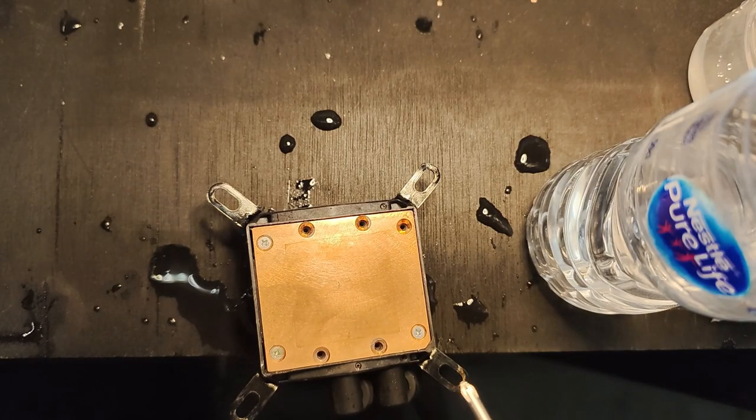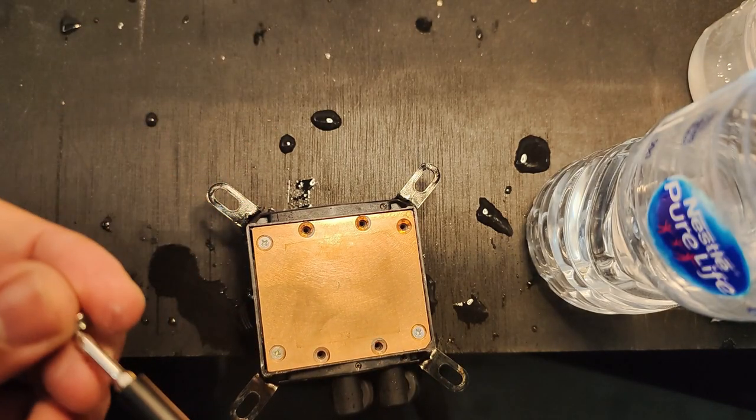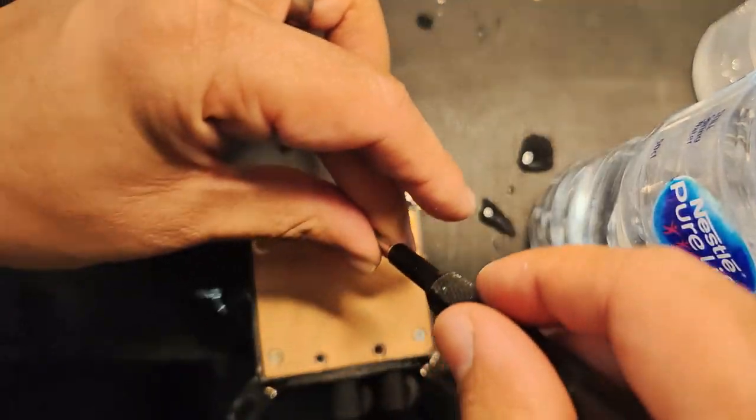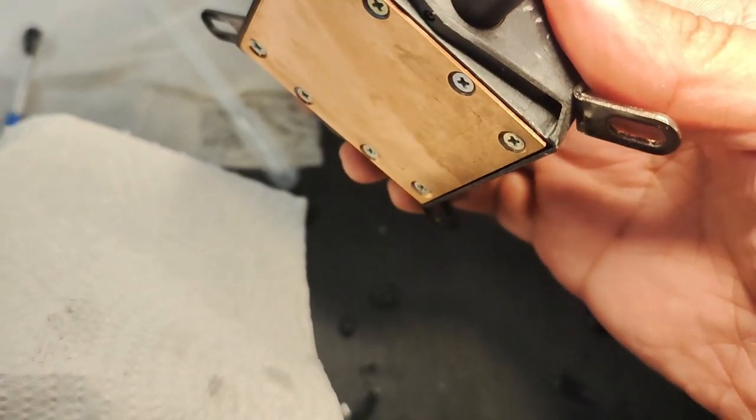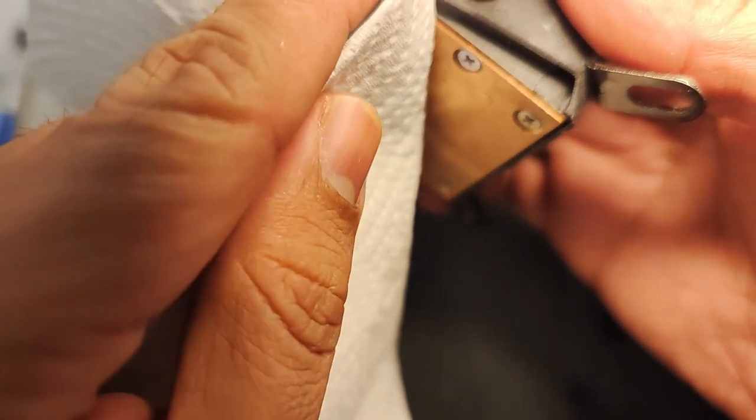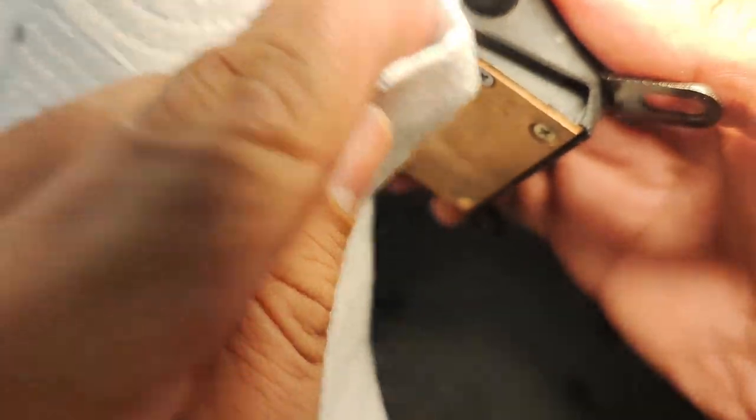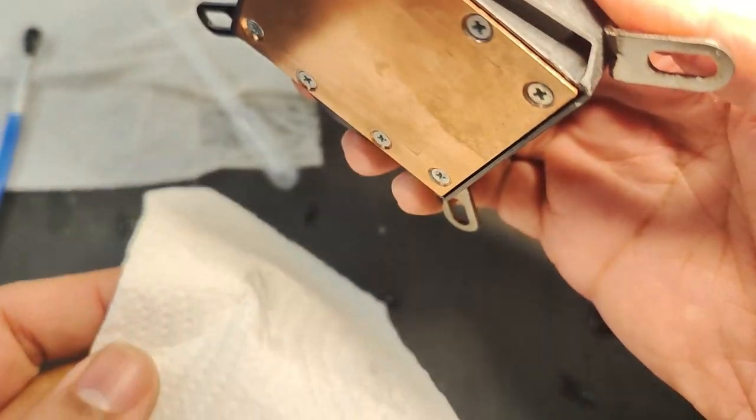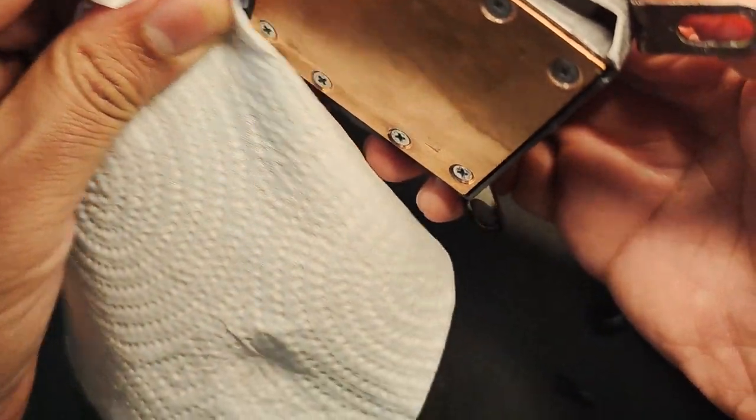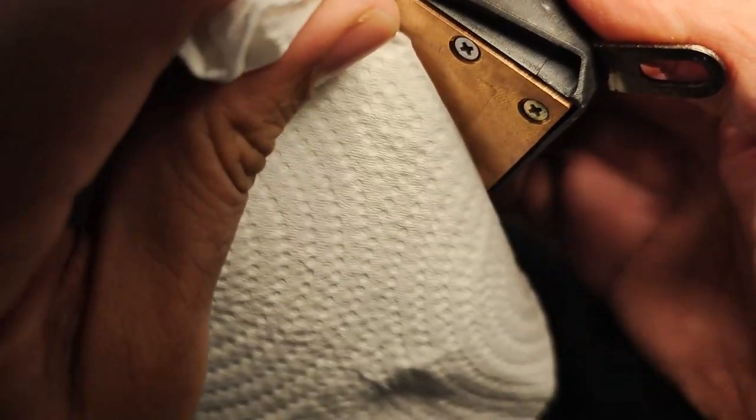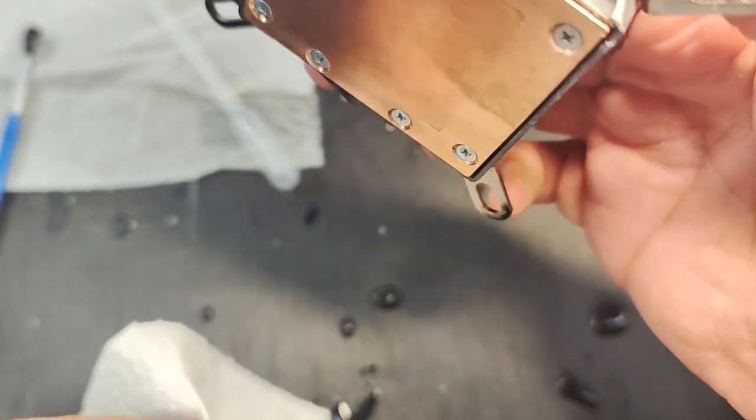Once you're done putting all the screws back in, I've actually got the air cooler powered on again through the power source, and you want to check for any leaks or any water coming out of the cooler, both from the end where it actually connects onto the CPU but also from the radiator. Make sure there's no leaks or anything like that.